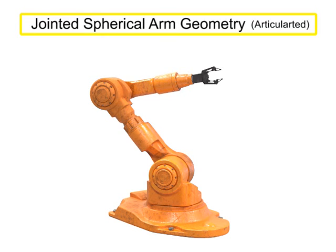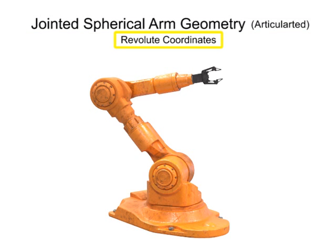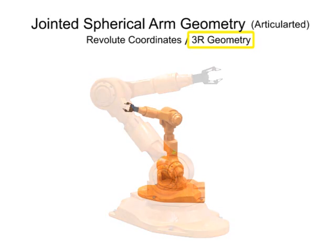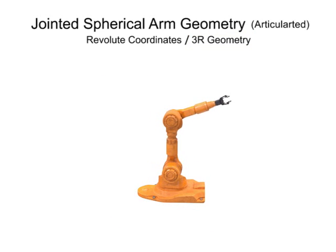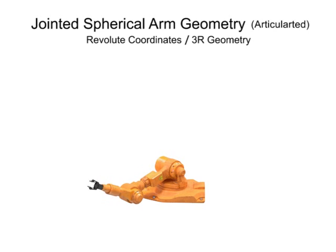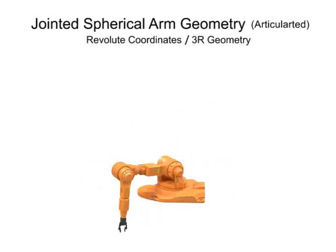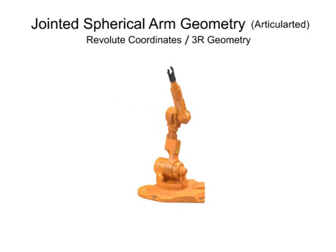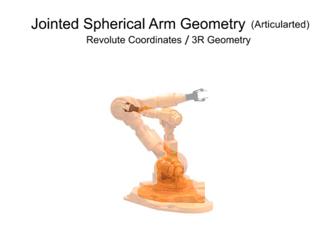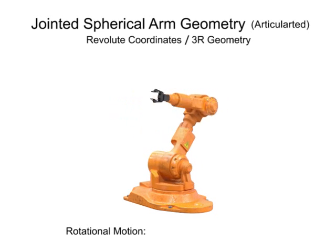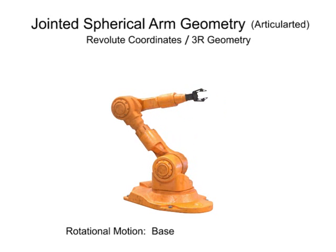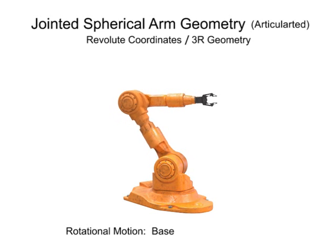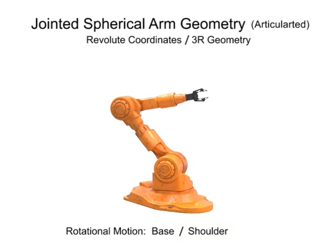Jointed spherical arm geometry robots have rotation in three directions, use revolute coordinates, and are given the designation of 3R. They are one of the most popular types of robotic arms and most accurately mimic the movement of the human arm. Robotic arms with jointed spherical or articulated geometry rotate on at least three axes: left and right movements are provided by rotation at the base, horizontal movement by rotation at the shoulder, and vertical movement by rotation at the elbow.